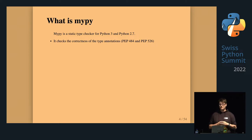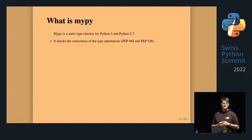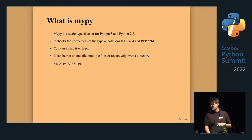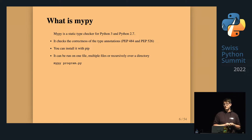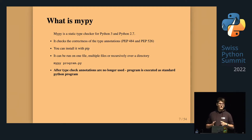Mypy is a Python program that allows checking for correctness of type annotations — those standard type annotations from Python itself. You can install this program with pip, run it over one Python file, run it recursively over a directory or a module. Because of this, you don't have to type the whole project from the very beginning; you can go file by file, directory by directory.